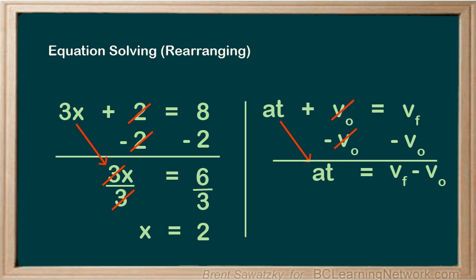In the previous example, we could reduce this down to one number. In this case, we have to leave it as vf minus v0, knowing that we may end up with those numbers later. And then we'll know what to do with them. For now, we just have to say vf has to be subtracted by v0.